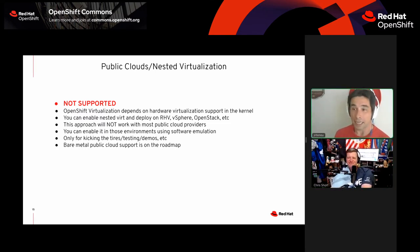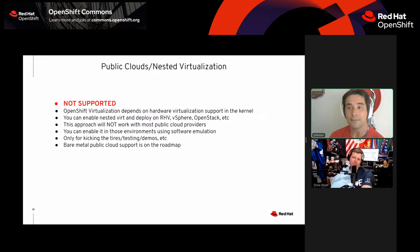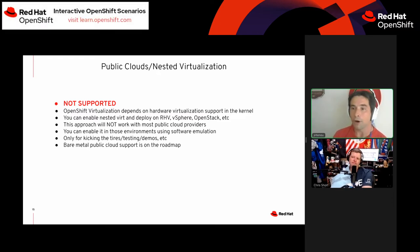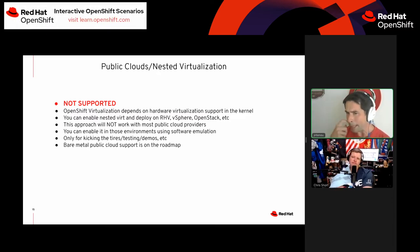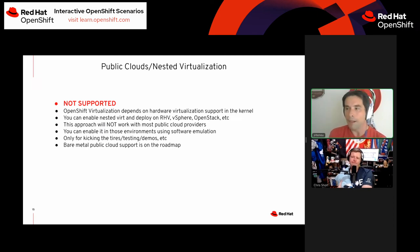OpenShift Virtualization does depend on hardware virtualization. You can enable nested virtualization on RHV, vSphere, or OpenStack, which exposes the VMX bits and allows you to run nested on that environment. You're not going to see too big of a performance hit that way because it's just passing CPU instructions directly to the underlying host.